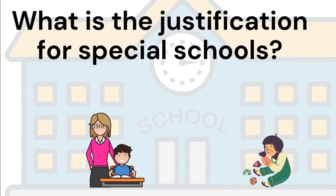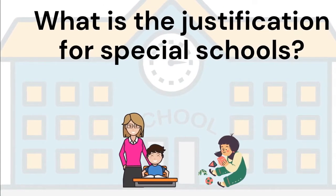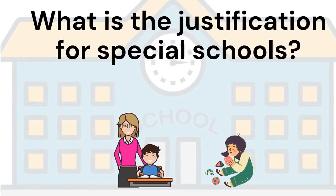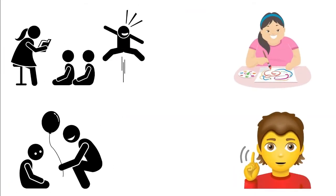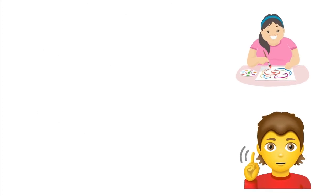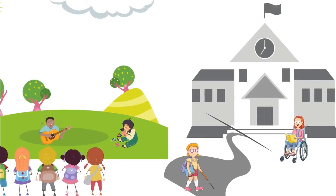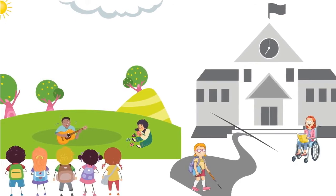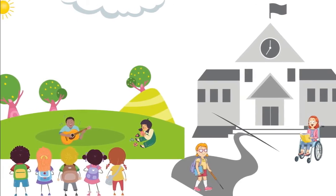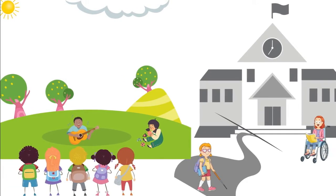The Act creates special schools for children with disabilities without justification. Although some children may need assistance or accommodation, that is not true for all children with disabilities. There is no justification for treating children without disabilities differently from children with disabilities who require no accommodation.